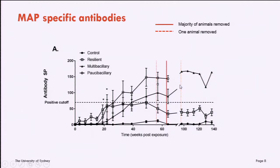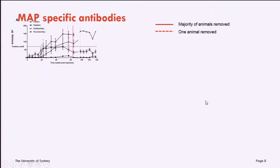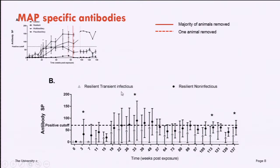Looking at MAP-specific antibodies using a commercial kit diagnostic test, it's a busy graph, but I want to focus on the early section up to 20 weeks. The black squares represent the resilient animals. Though it wasn't significantly different from the infected animals, there is this early kick of an antibody response in the animals that become resilient, and you do see this again later at the end of the trial. When we looked at the difference between the resilient infectious and non-infectious groups, there is really no meaningful difference.